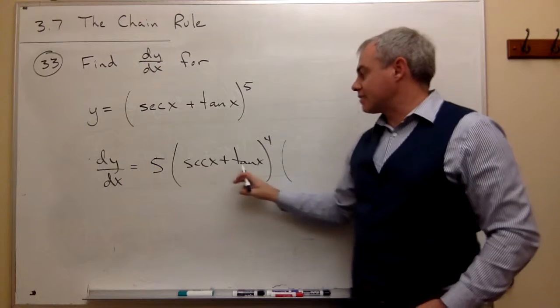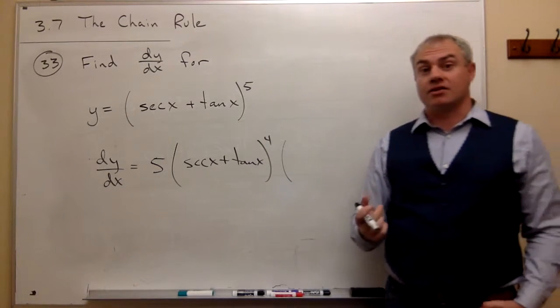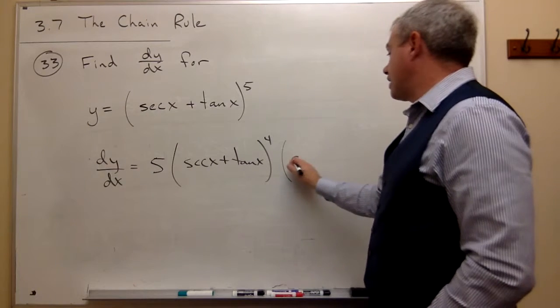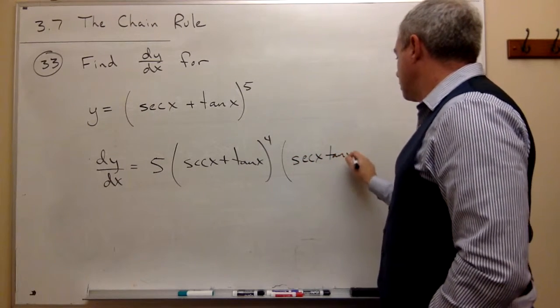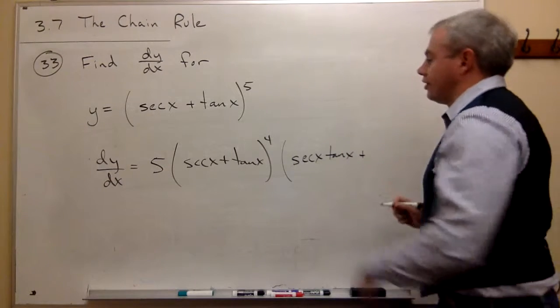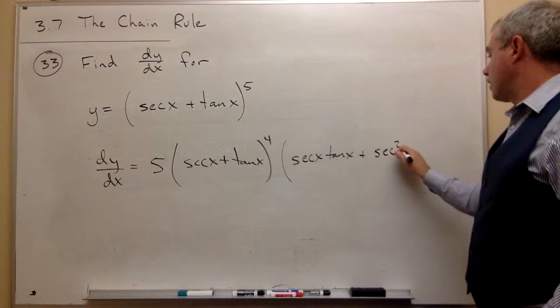So what's the derivative of secant x plus tangent of x? The derivative of secant of x is secant x tangent x. And then I need to add on the derivative of tangent of x, which is secant squared of x.